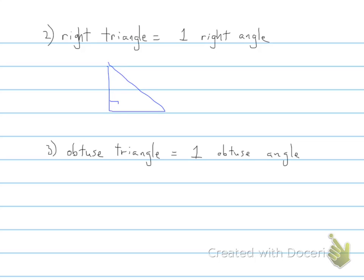Remember that angle is equal to 90 degrees. The third type of triangle is an obtuse triangle, and this type of triangle has one obtuse angle.